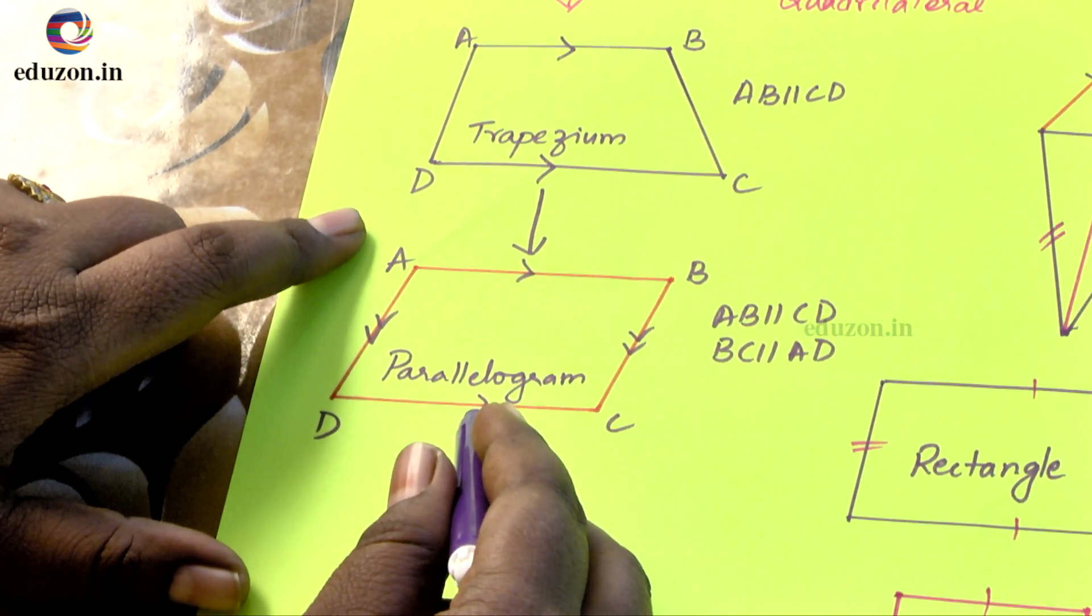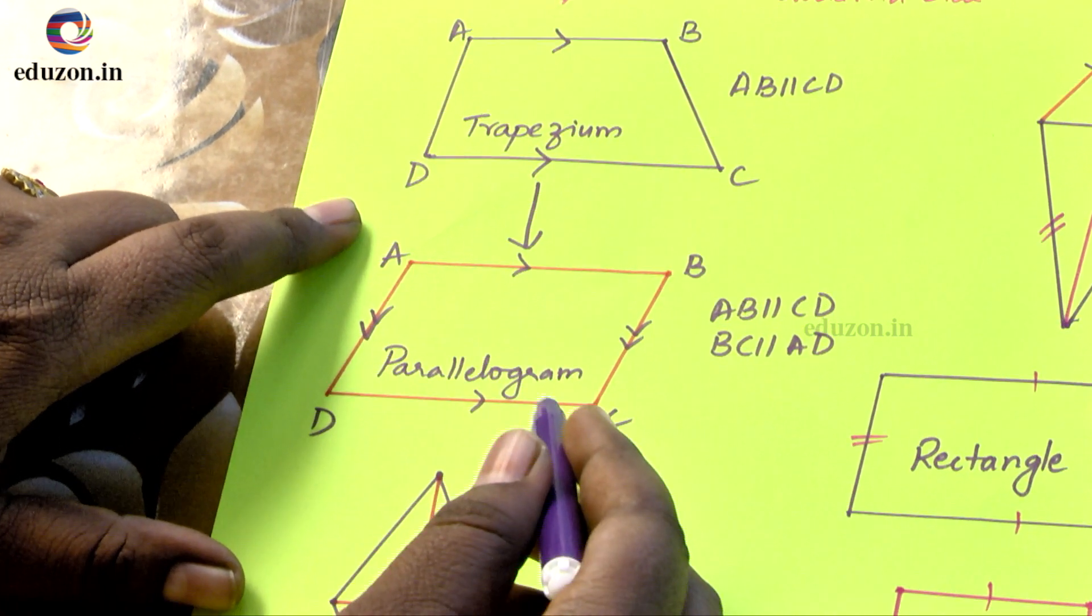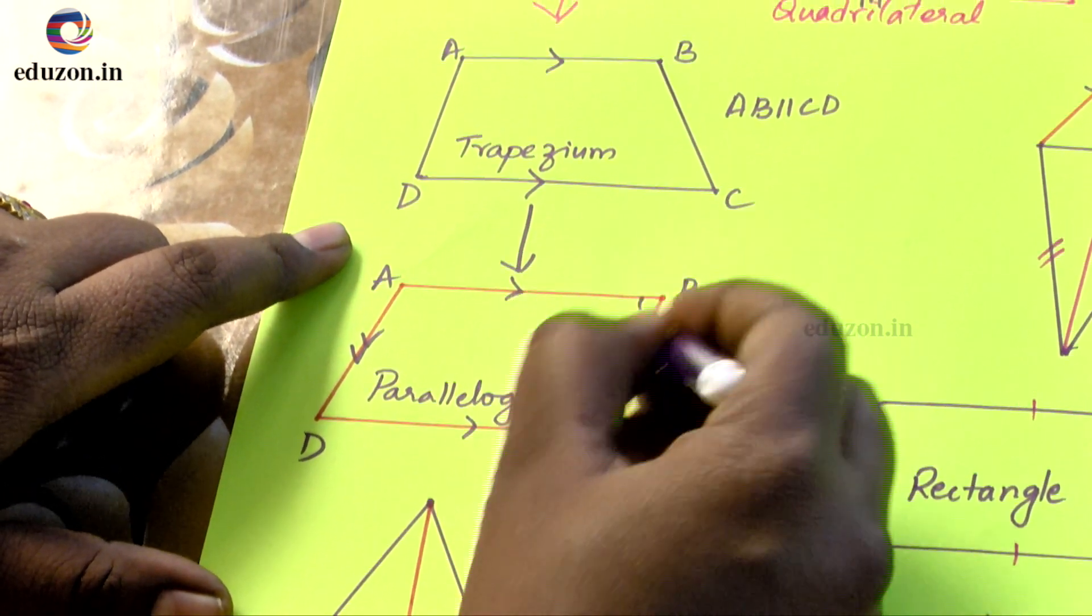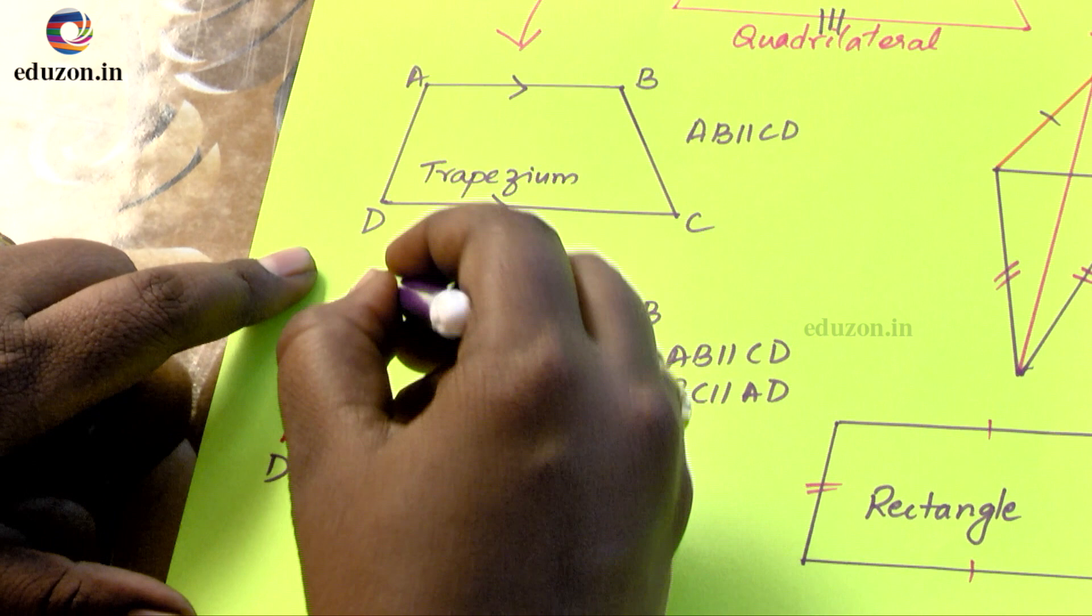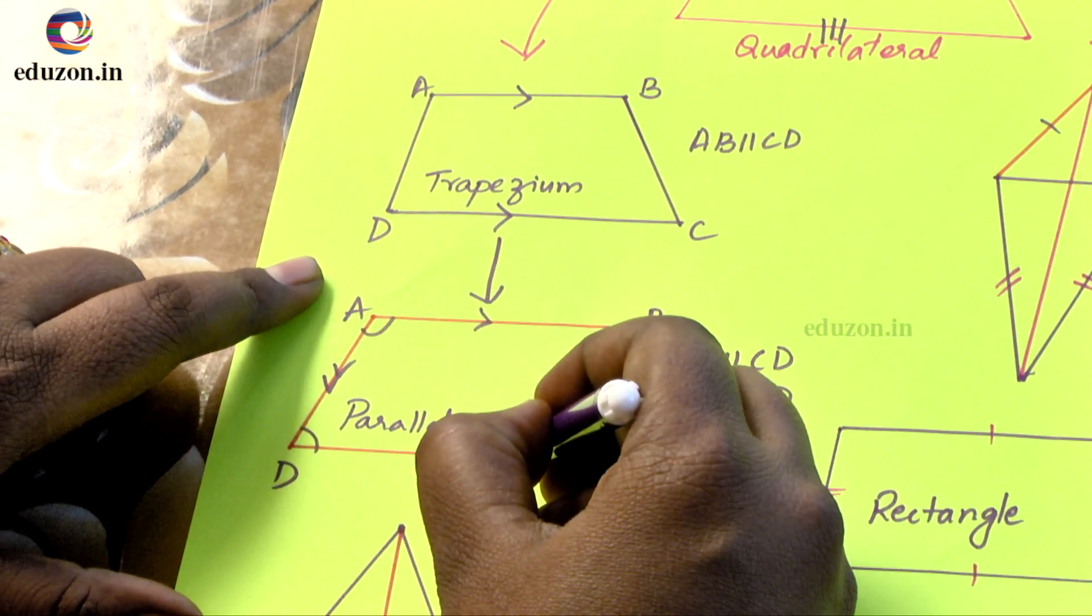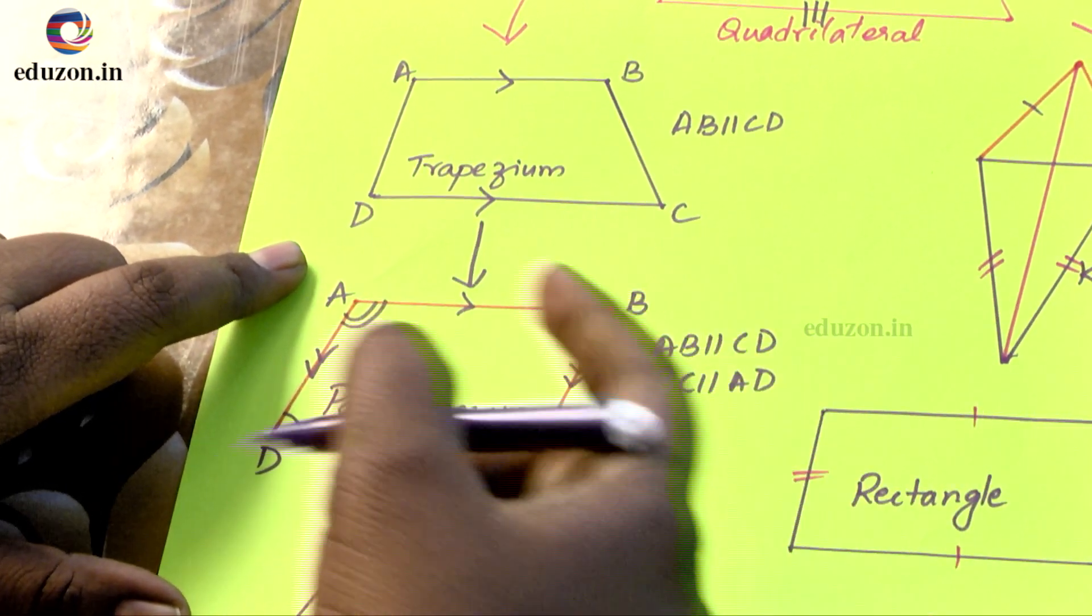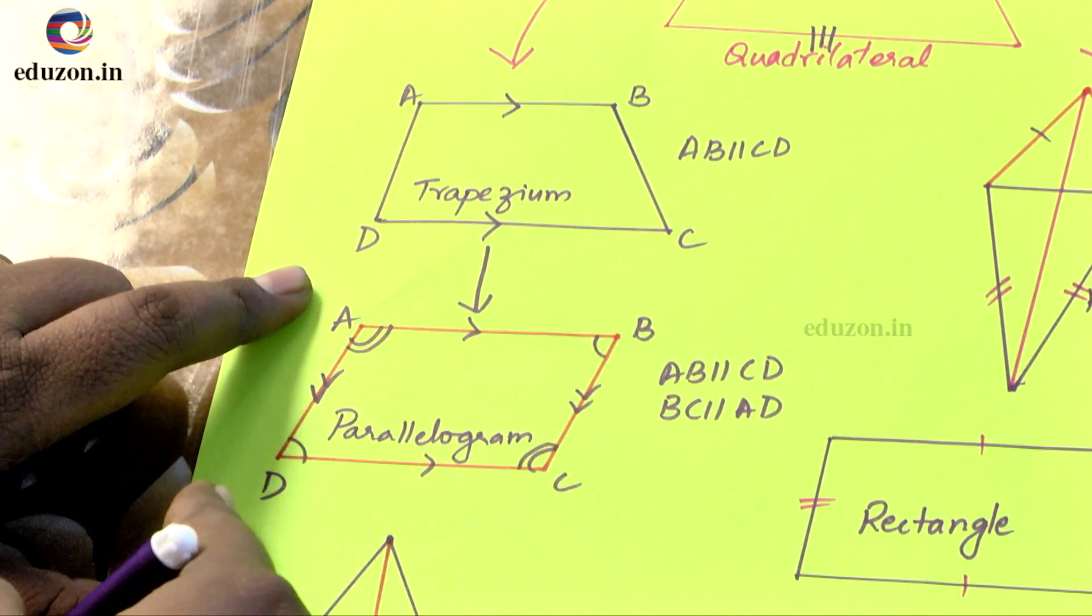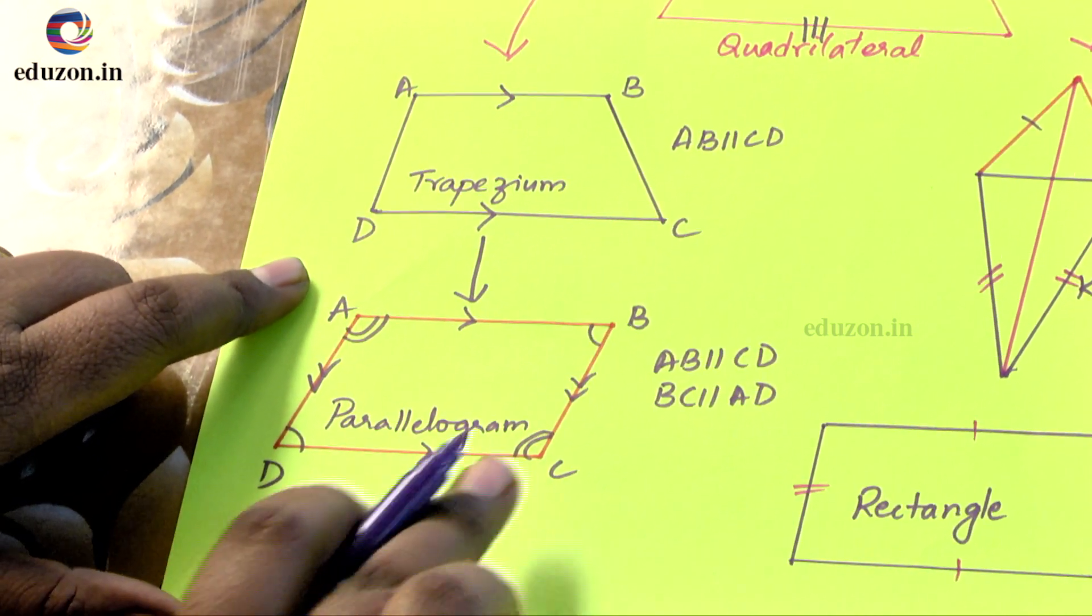Now in this parallelogram we have so many properties. For example, all the four angles, when we consider opposite angles of a parallelogram, will be equal. That is angle B will be equal to angle D, and angle C will be equal to angle A.